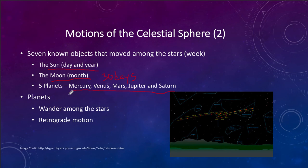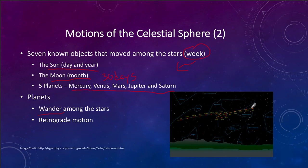So how did we end up with a week of seven days? That's because there were seven objects that wandered through the sky — five planets, the moon, and the sun — which did not stay fixed relative to the rest of the stars. The word 'planets' comes from 'wanderers,' because they wandered among the stars and moved through them.